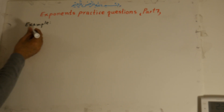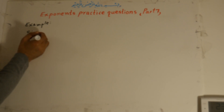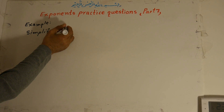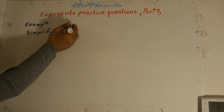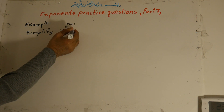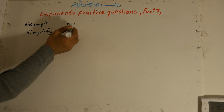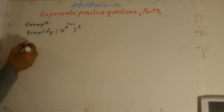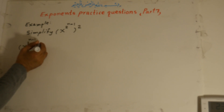Simplify: x to the power of 2, all to the power of n minus 1, all to the power of 2. Now how can we simplify this exponent question? We have x to the power of 2, times 2 to the power of n minus 1, all to the power of 2.